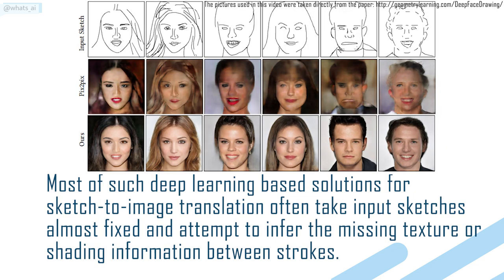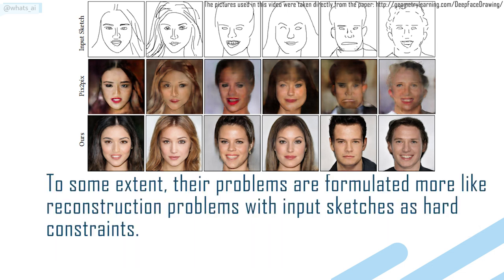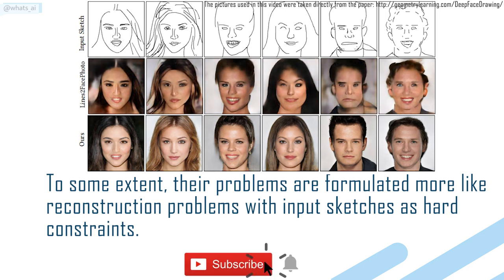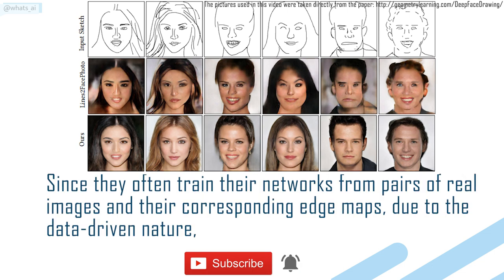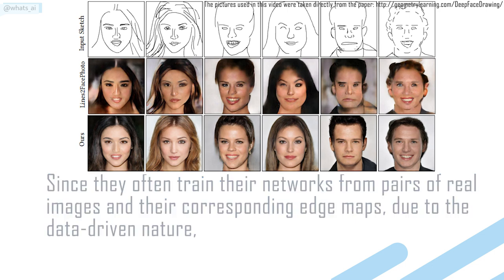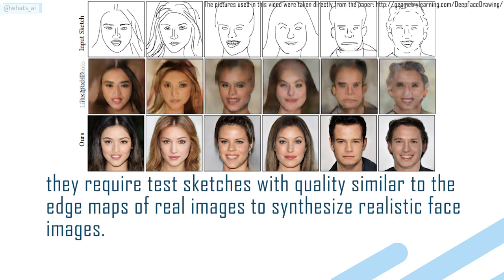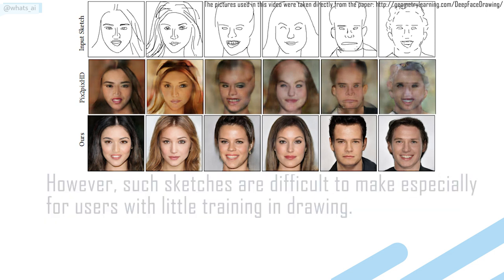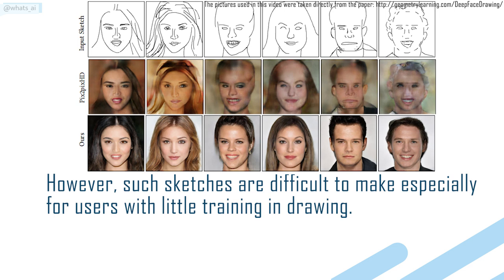Most deep learning-based solutions for sketch-to-image translation take input sketches as nearly fixed and attempt to infer the missing texture or shading information between strokes. Their problems are formulated more like reconstruction problems with input sketches as hard constraints. Since they train on pairs of real images and their corresponding edge maps, they require test sketches with qualities similar to those edge maps to synthesize realistic face images, which are difficult to make for users with little drawing training.